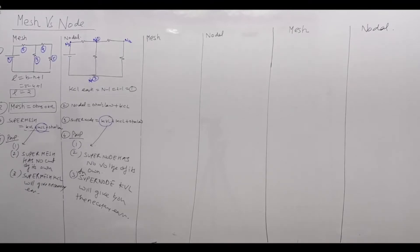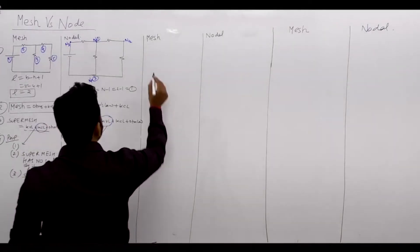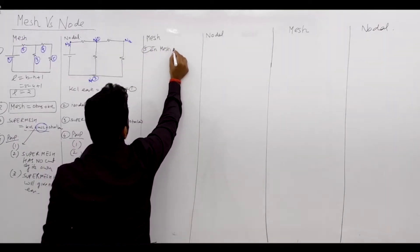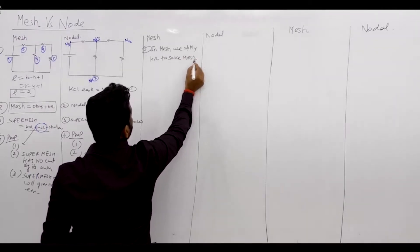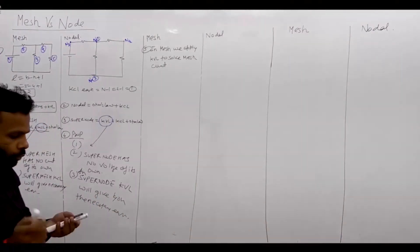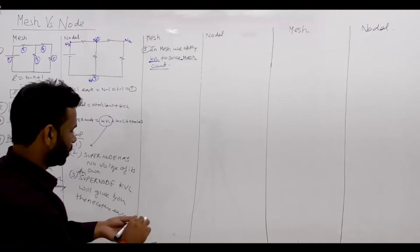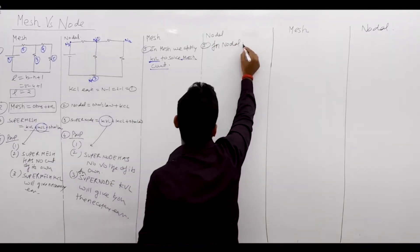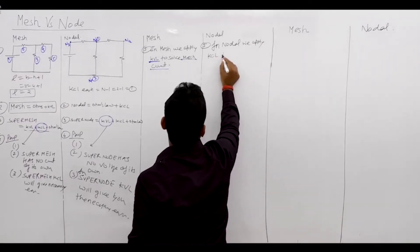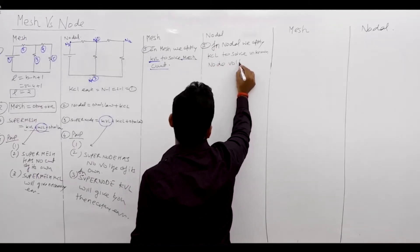So we have now covered 4 points of mesh vs nodal. For point 5: in mesh analysis, we apply KVL to solve for unknown mesh currents. Similarly, in nodal analysis, we apply KCL to solve for unknown node voltages.